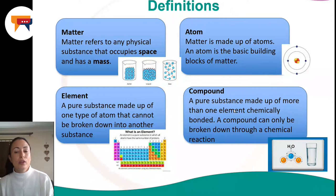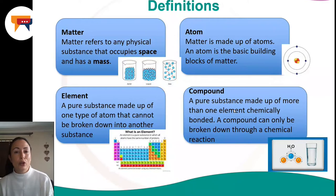A compound is a pure substance made up of more than one element, chemically bonded. A compound can only be broken down through a chemical reaction. Examples of a compound include water, carbon dioxide, hydrochloric acid, and sodium chloride. It's just two or three elements bonded together using different chemical bonds.